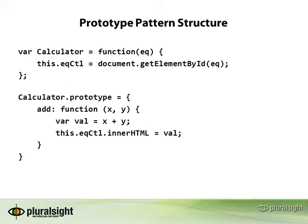In the case of the prototype pattern, the way it works is you first have to define your object and associate it with a constructor. You simply save the name of the object and follow that with a function. Any parameters you want to initialize the object with can be passed in through this constructor. You'll see I'm passing an eq parameter, then using that eq parameter to locate a DOM element with that ID and associating it to the eqctl. You'll notice we're prefixing eqctl with the this keyword, which you'll see used fairly frequently with this pattern. When calculator is invoked and a new instance is created, we want to associate this variable with that instance — we do that by saying this.eqctl and assigning it to the value passed in through the constructor.